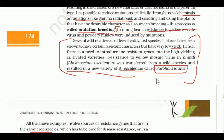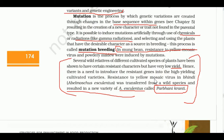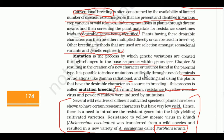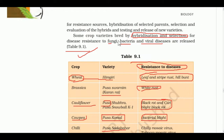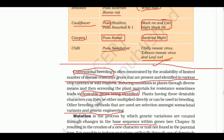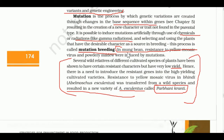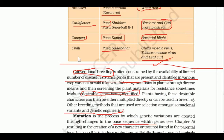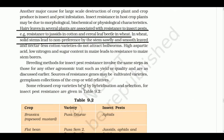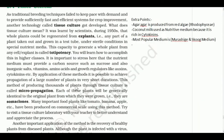Parbhani Kranti was developed by conventional hybridization. In moong beans, mutation breeding was used. The other examples used conventional hybrid varieties. The only one developed through mutation breeding is moong beans.